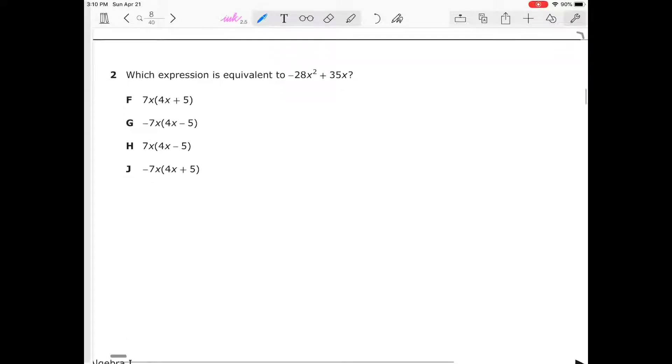Number two: which expression is equivalent to -28x² + 35x? We can take out a -7, so that means we're going to eliminate F and we're going to eliminate G.